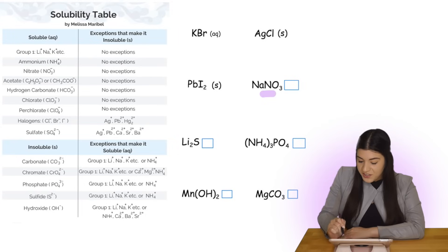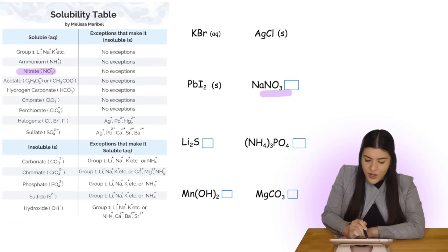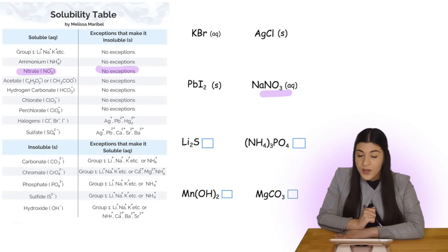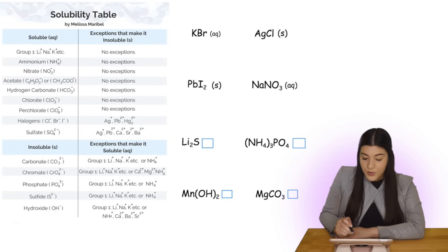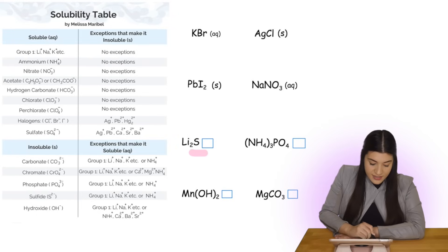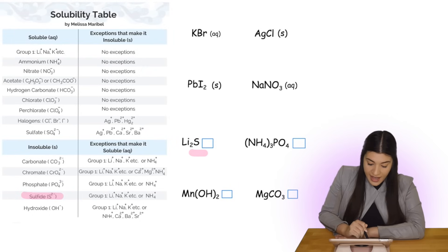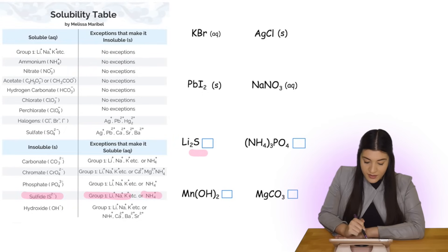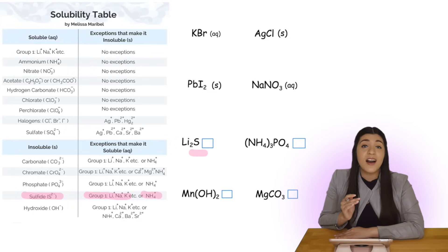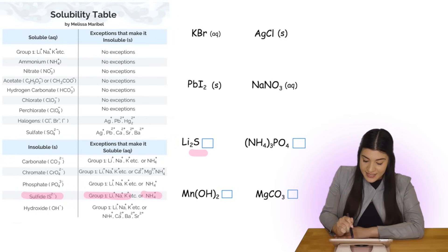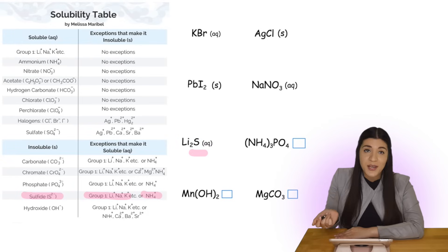Now let's look at nitrate. Nitrate has no exceptions, so it's always soluble no matter what — it's aqueous. Moving on to sulfide: sulfide is typically insoluble with the exception of Group 1 metals or ammonium. Lithium is in Group 1, so it does fall under that exception. This compound is soluble or aqueous.